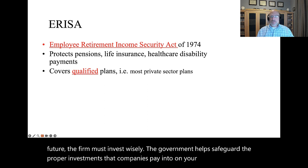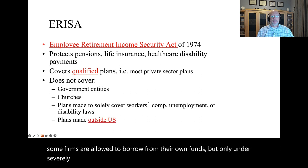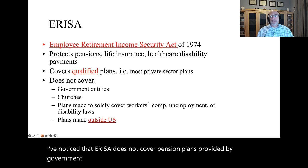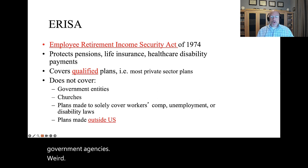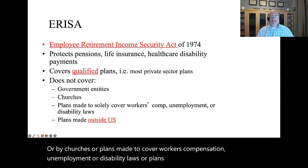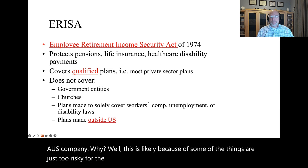Interestingly, some firms are allowed to borrow from their own funds but only under severely restricted rules. Of note is that ERISA does not cover pension plans provided by government agencies, or by churches, or plans made to cover workers' compensation, unemployment, or disability laws, or plans made outside the U.S. even if by a U.S. company. This is likely because some of these things are just too risky for the government to guarantee.